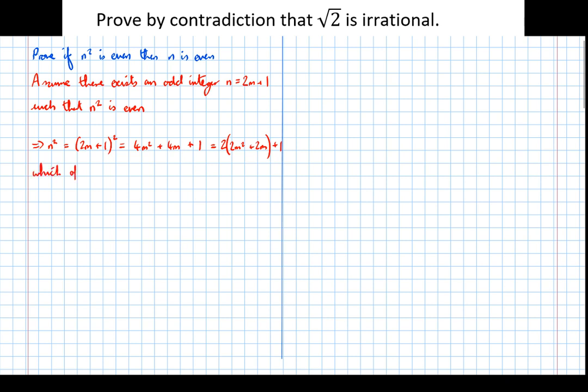So that's clearly of the form 2 times something plus 1 therefore odd, a contradiction. Therefore the original statement in blue, if n squared is even then n is even.